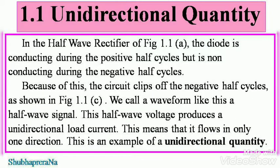In the half-wave rectifier of figure 1.1A, the diode is conducting during the positive half cycles but is non-conducting during the negative half cycles. Because of this, the circuit clips off the negative half cycles, as shown in figure 1.1C. For the current, we call a waveform like this a half-wave signal. This half-wave voltage produces a unidirectional load current, which means that it flows in only one direction.